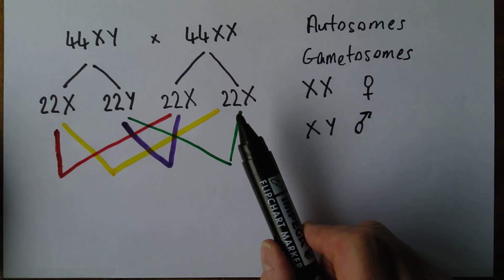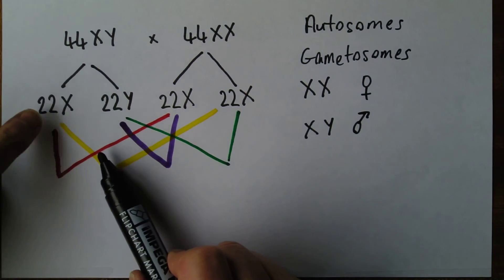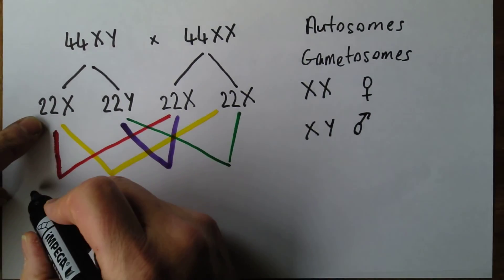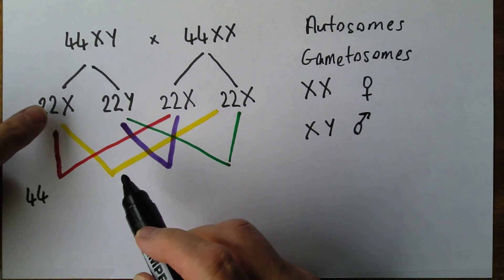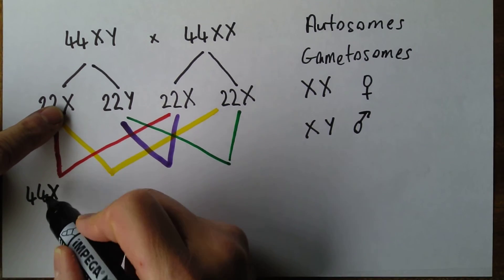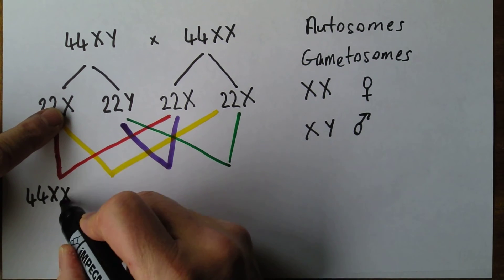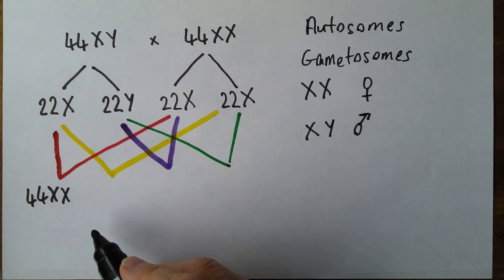Let's work out what happens if it's this one. So we've got 22 plus 22 gives us 44 again. And there we get an X from that sperm and we get an X from that ovum. So there we have 44XX, which of course is a female.